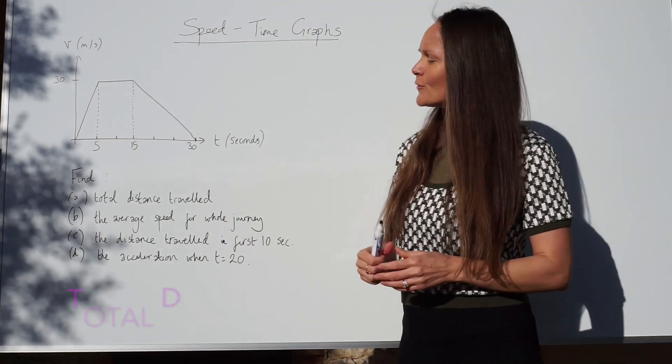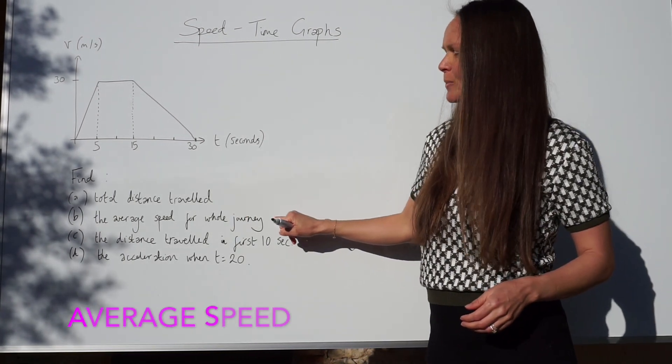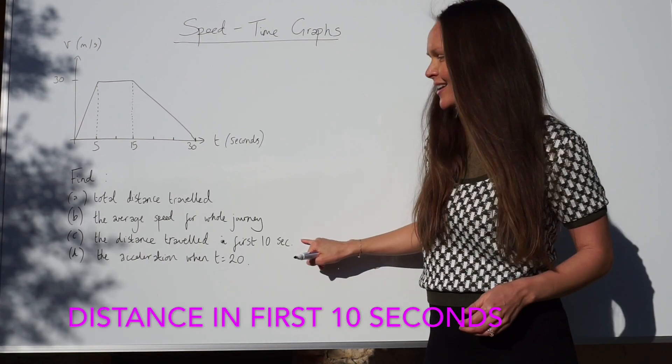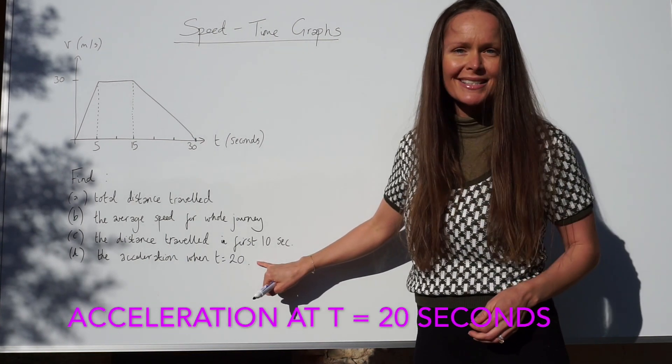There are four parts to this question. In the first part we have to find the total distance travelled. In the second part, the average speed for the whole journey. Next, we have to find the distance travelled in the first 10 seconds. And finally, the acceleration when time equals 20 seconds.